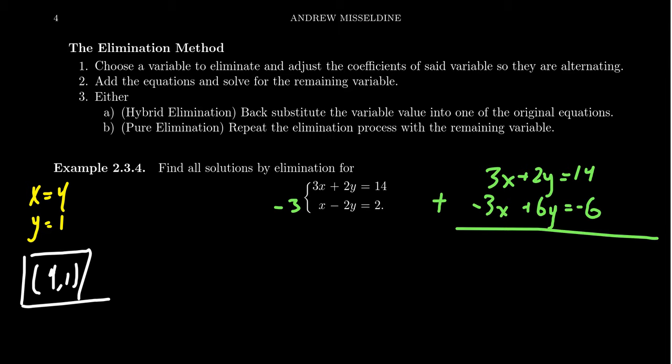And so this time when we add them together, you're going to see that because of the adjustment of the coefficients, the 3X minus 3X will actually cancel each other out. That's what we're trying to do. We want to make the coefficients of the X be opposite but equal. So we want an absolute value of 3, but one's positive, one's negative. On the other hand, when you combine the Y's together, you get 2Y plus 6Y, which is 8Y. They don't cancel out this time. And then 14 take away 6 is 8. Divide by 8 on both sides, you get Y equals 1, which is what we saw earlier. It's the same solution.